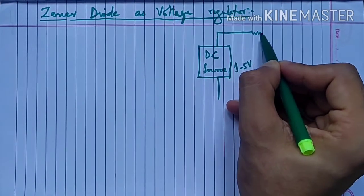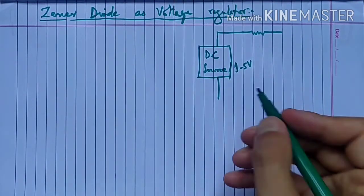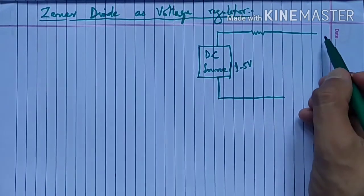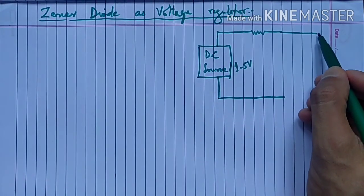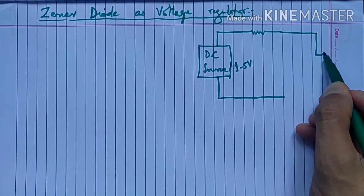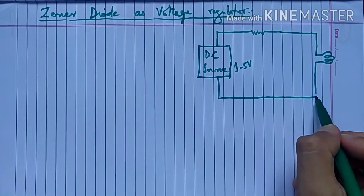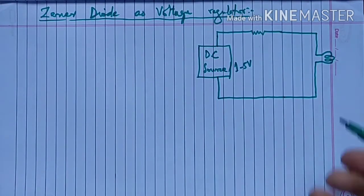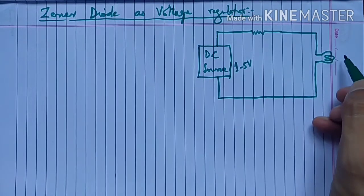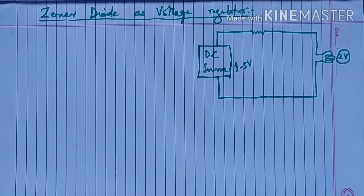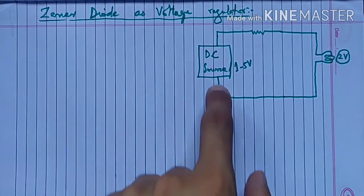अगर हम इसके आगे suppose एक resistor connected है, external circuit में एक load है - there is a bulb, या LED लगा सकते हैं, LED बल्ब है। और LED बल्ब जो है वो maximum of say two volt potential difference resist कर सकता है। तो two volt से ज़्यादा अगर potential difference हो गया तो यह blow off करेगा, यह बल्ब। तो अब यहाँ पर जो DC source है उसका voltage fluctuate कर रहा है।